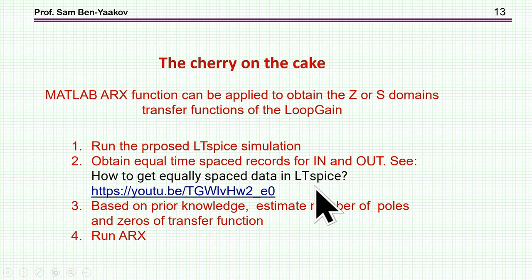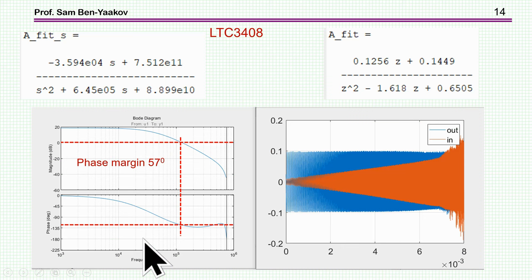So you get the two records of the input and out. And then, based on prior knowledge of the type of the system, you kind of get the guess or estimate the number of poles and zeros of the transfer function. And then you run this ARX function, this estimation function. And lo and behold, you get the result. Very, very nice.